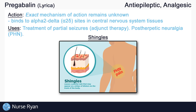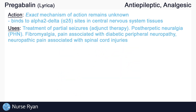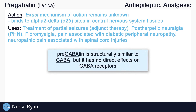Pregabalin can also be used in the management of fibromyalgia, pain associated with diabetic peripheral neuropathy, and neuropathic pain associated with spinal cord injuries. Pregabalin is structurally similar to the inhibitory neurotransmitter called GABA, where pregabalin gets its name from, but it has no direct effects on GABA receptors.